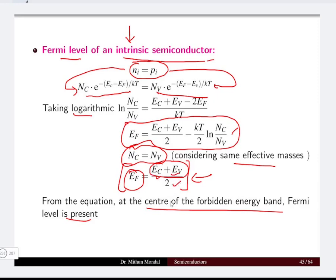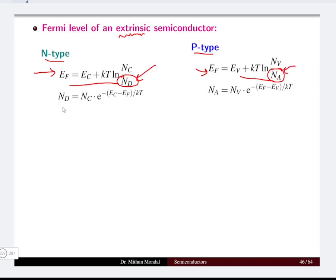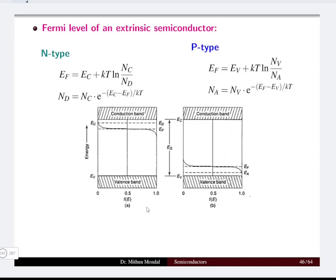For an extrinsic semiconductor where the semiconductor is doped — either n-type or p-type — the Fermi energy level equation is governed by the presence of donor or acceptor impurity atoms. In n-type semiconductors we have donor atoms, and in p-type we have acceptor impurity atoms. The equations for Nd and Na are derived from the carrier concentration equations.